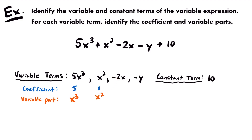Moving on to negative 2x, the coefficient would be negative 2 — it's the number in front of the variable, and you want to include the negative sign. So our coefficient is negative 2, and the variable part would just be x. And finally, for negative y, this is similar to x squared — it looks like just a negative sign, but remember, that actually represents negative 1. We're multiplying y by negative 1. So the coefficient is negative 1, and the variable part is just y.